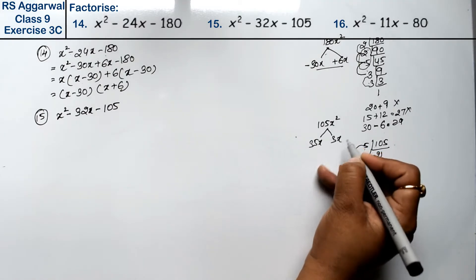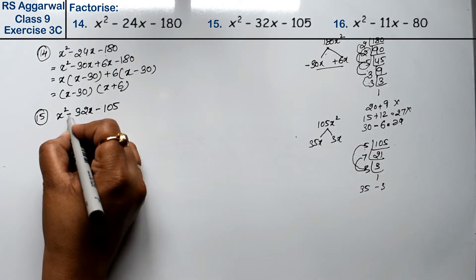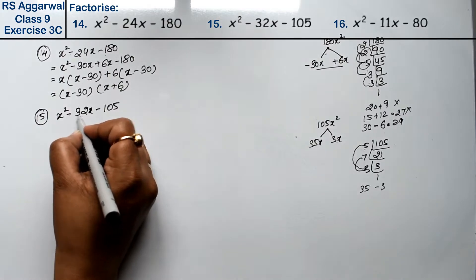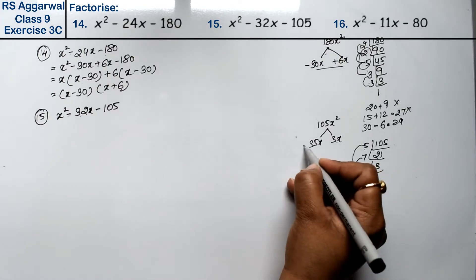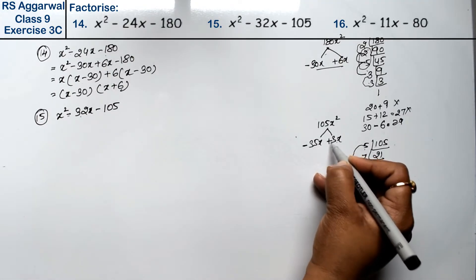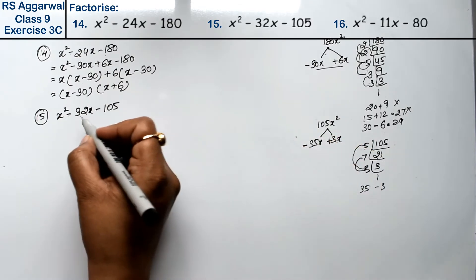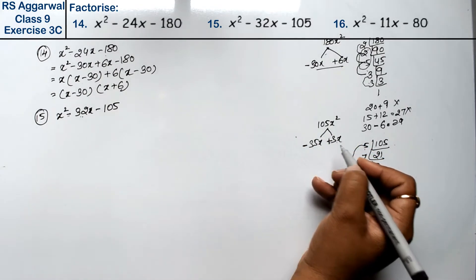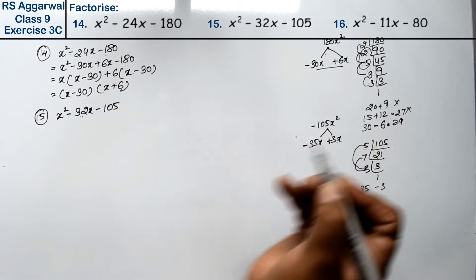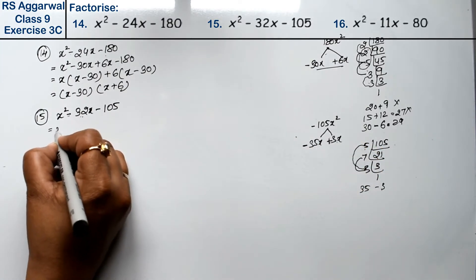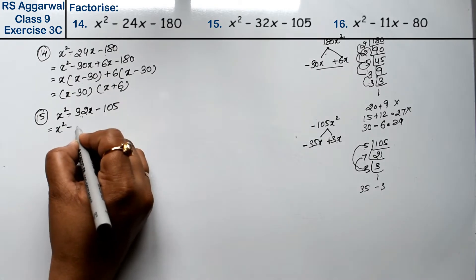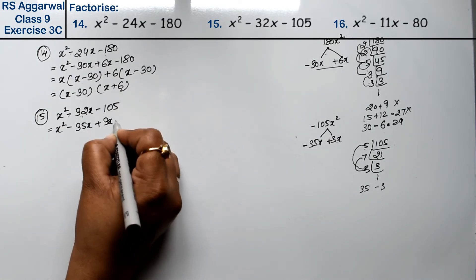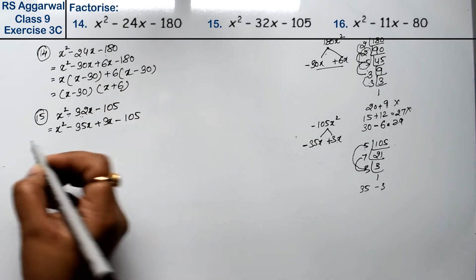So we get 35x and 3x. The sign in between is minus. Since we need minus 105, the greater number will take the minus sign and the other will take the opposite sign. So this gives us: x squared minus 35x plus 3x minus 105.